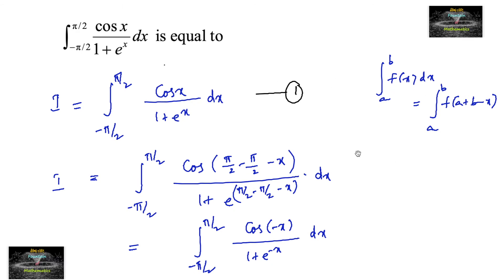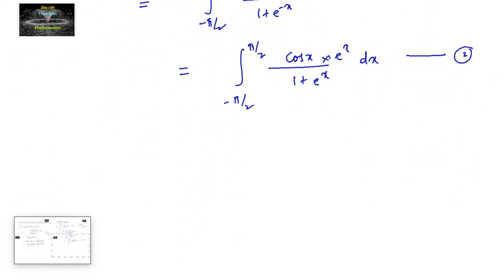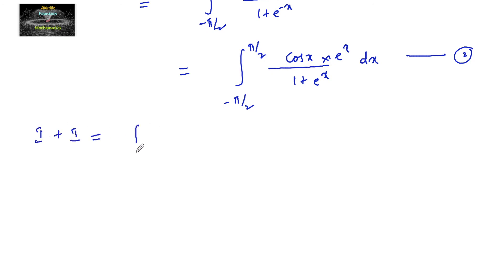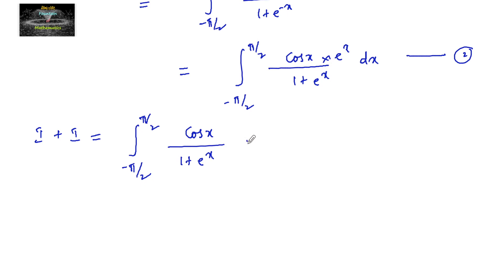Now adding Equation 1 and Equation 2: I plus I equals the integral from minus pi by 2 to plus pi by 2 of cos(x) divided by 1 plus e to the power x, plus cos(x) times e to the power x divided by 1 plus e to the power x, all dx.